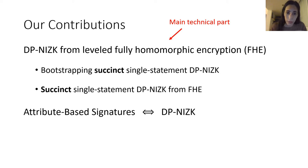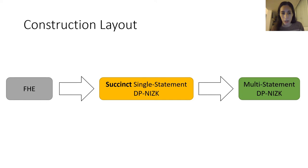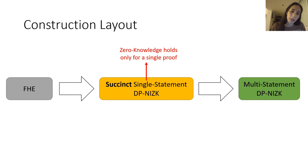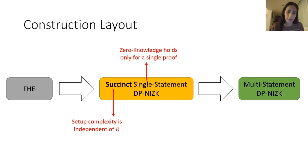The high-level structure of our construction is as follows. We have an FHE scheme. We construct from it a succinct single statement DP-NIZK, and then show how to bootstrap it to a multi-statement DP-NIZK. Single statement means the zero-knowledge guarantee holds as long as the prover only uses the secret key once. By succinctness we mean that the setup algorithm, which generates the CRS and the secret key, has complexity independent of the relation R — its running time and output size are independent of R.